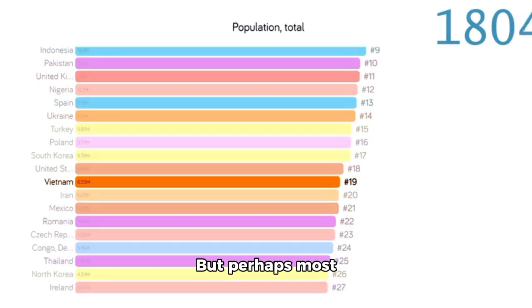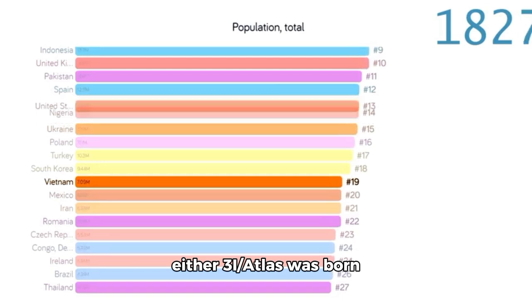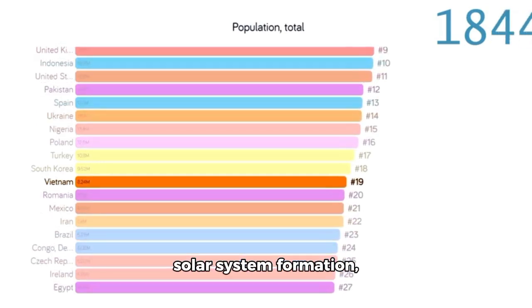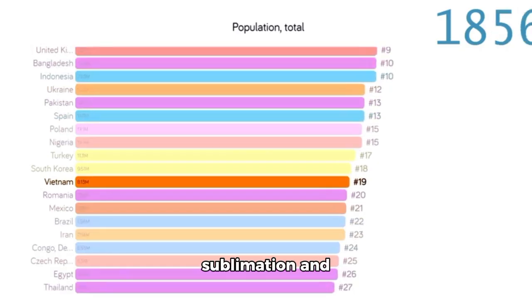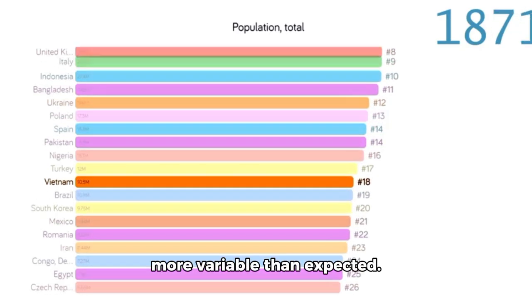But perhaps most important was what these results suggested. Either 3i Atlas was born from an entirely different recipe of solar system formation, or the rules of ice sublimation and outgassing we've relied on for decades are far more variable than expected.